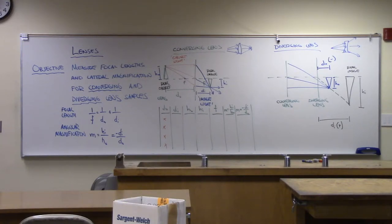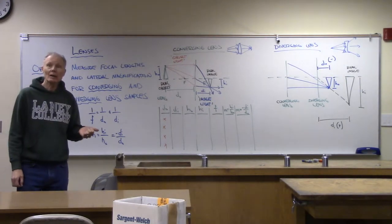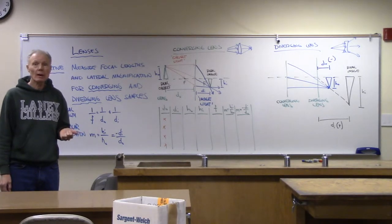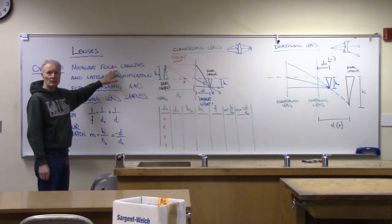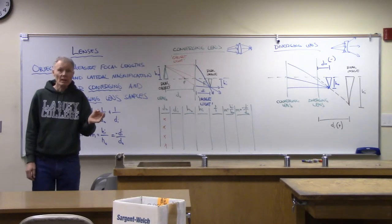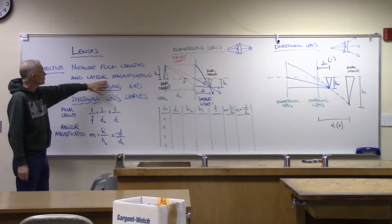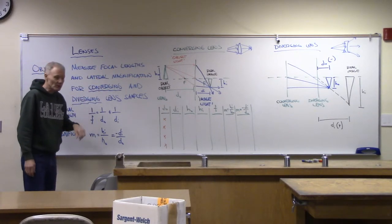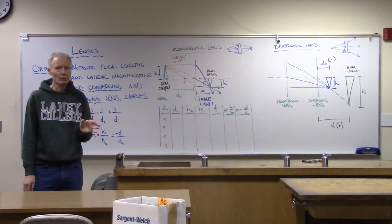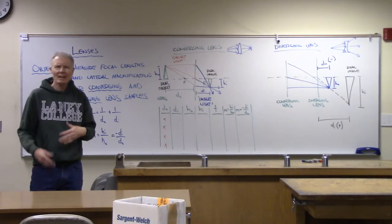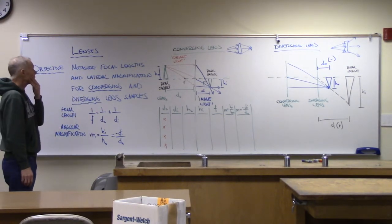Here we are back for another Physics 4C lab. We've been looking at lenses in class and we're ready to do some measurements. We want to measure the focal length of some lenses and also do some lateral magnification measurements. The magnifications are going to depend on where things are placed — on object placement — but the focal length is an intrinsic property of the lens itself.